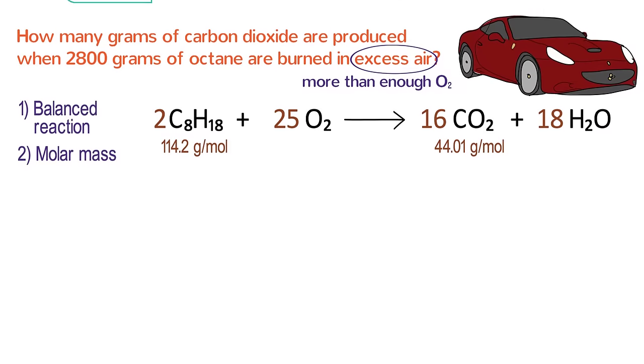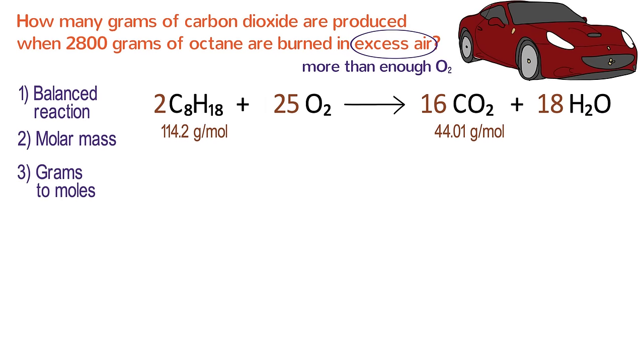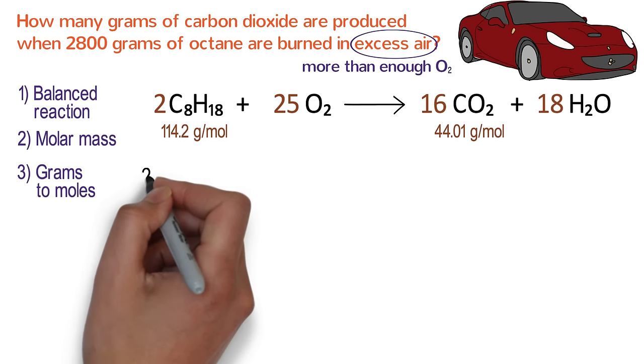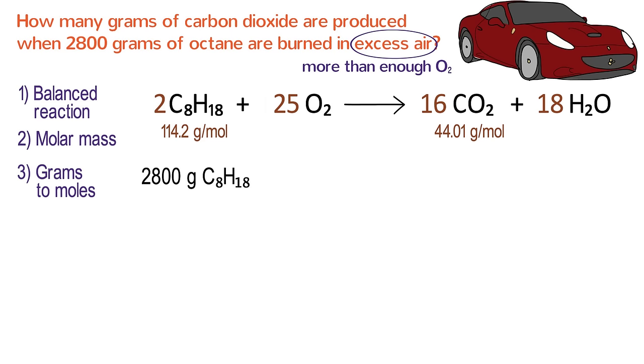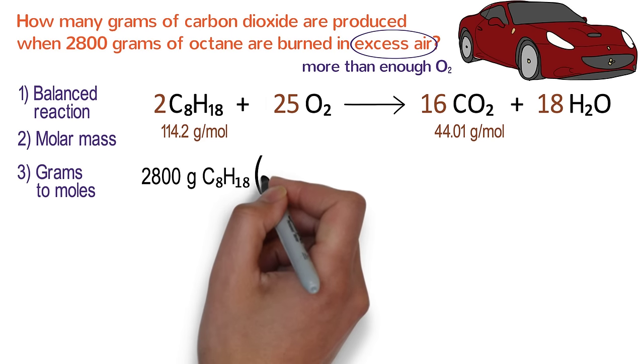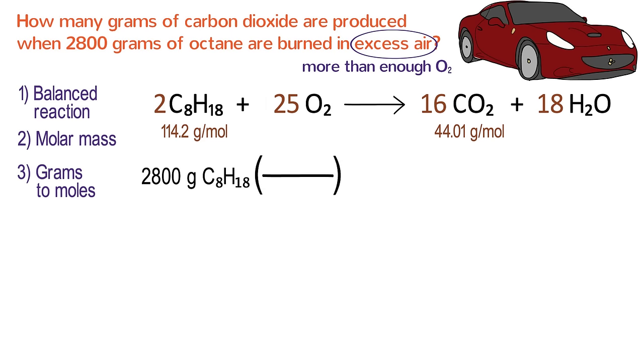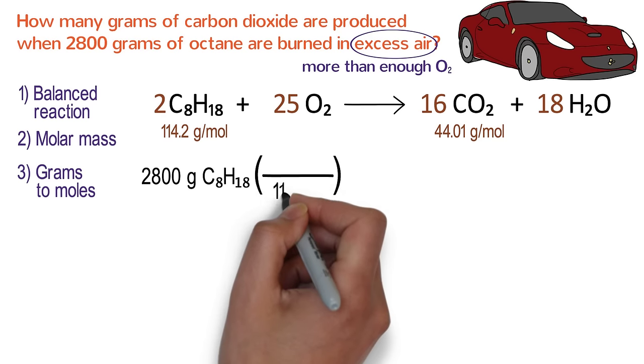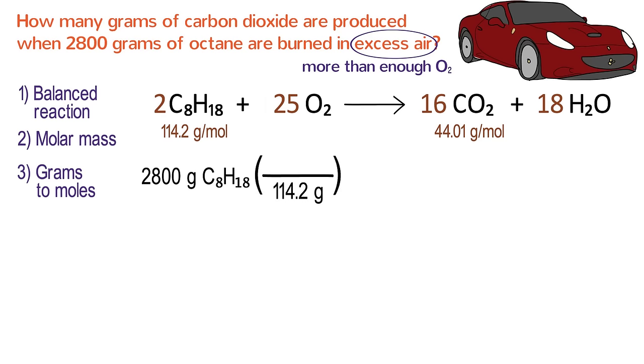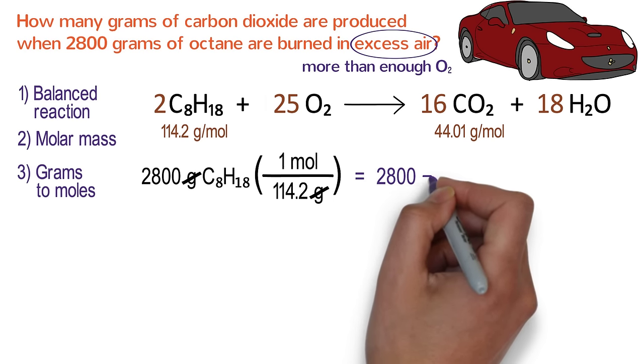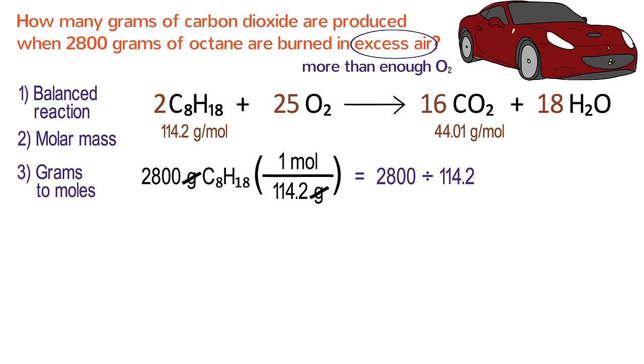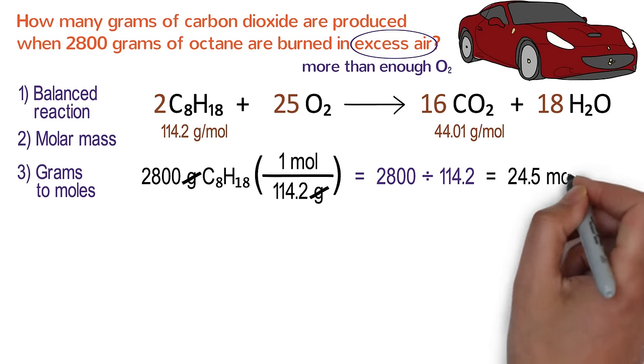The third step in our problem is to convert from grams to moles for the amount we know. The problem states that we are starting with 2800 grams of octane, so write that down first. We multiply this by a conversion factor fraction using the molar mass of octane as our conversion factor. Since we started with grams, write 114.2 grams on the bottom. And because we are solving for moles, write 1 mole on the top. Grams on the top and bottom cancel each other out. And because 114.2 is on the bottom, we divide 2800 by 114.2, which works out to be 24.5 moles of octane.